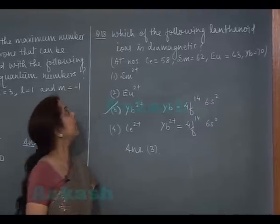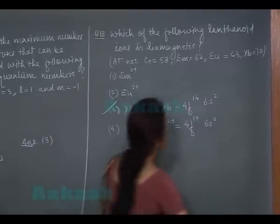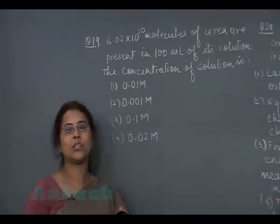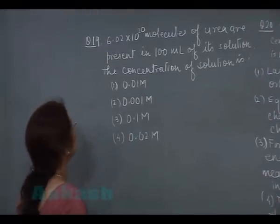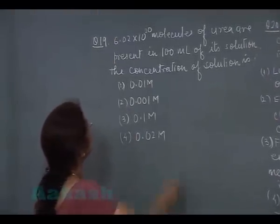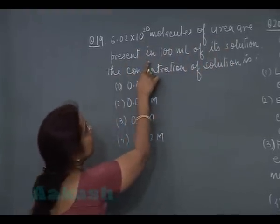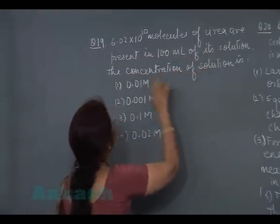Next question is question number 19. Now let's see the question number 19. 6.02 × 10^20 molecules of urea are present in 100 milliliters of its solution.